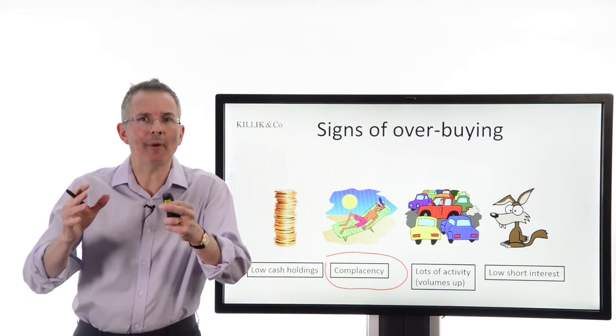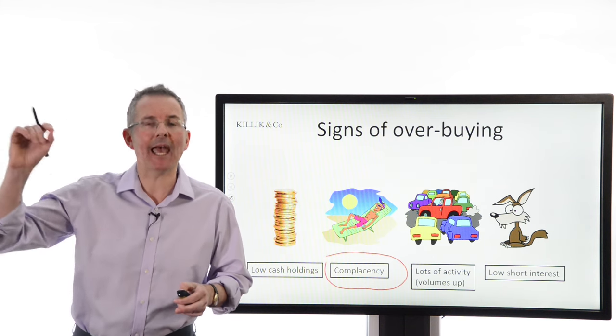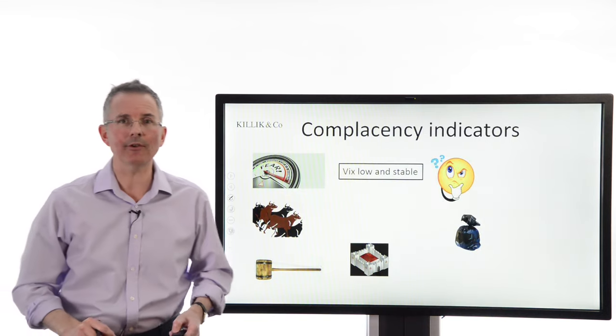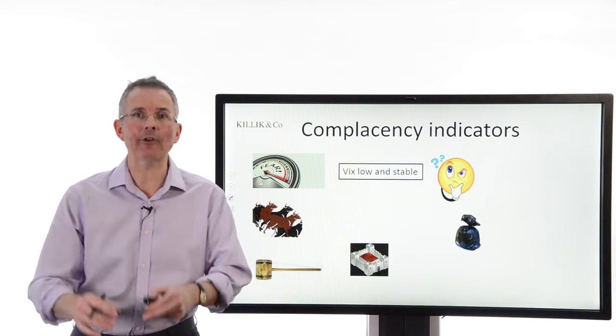Now, let's go back to complacency. What does a complacent market look like that will make a contrarian think, I'm getting out, before everyone else wakes up? Well, here are seven indicators. I cover them in more detail in other videos, so here's a snapshot.